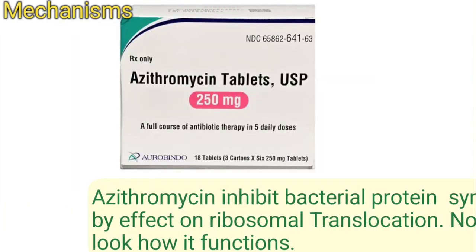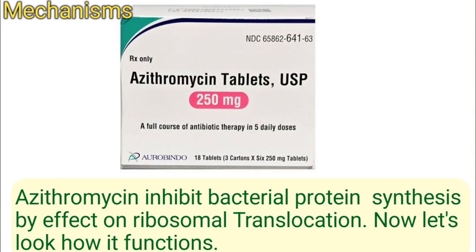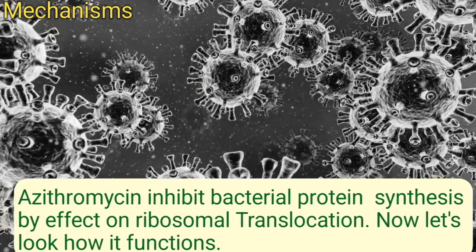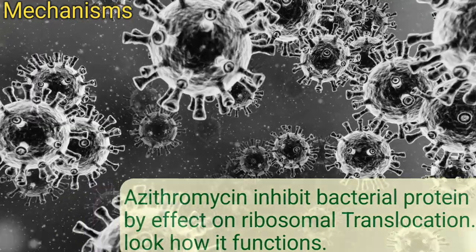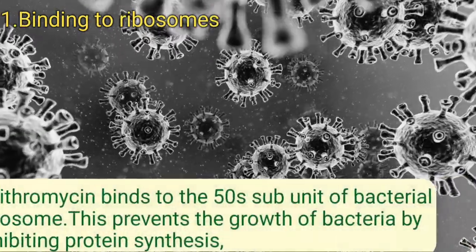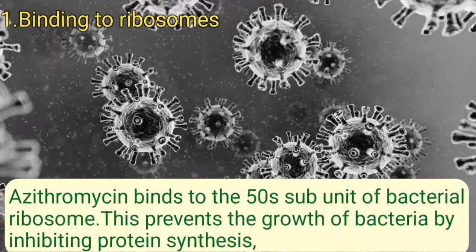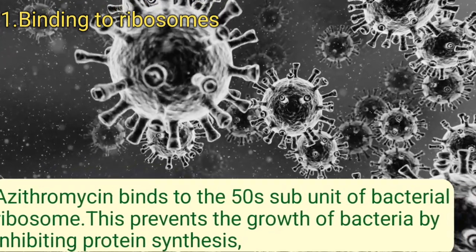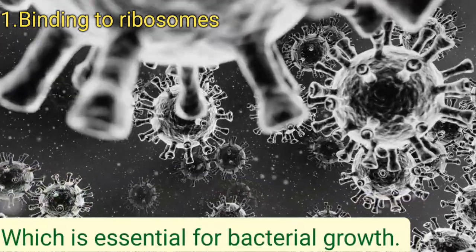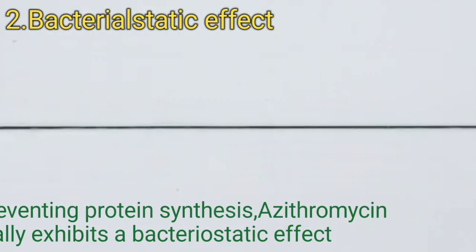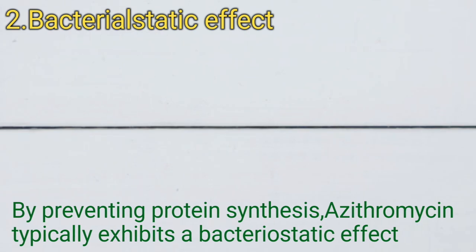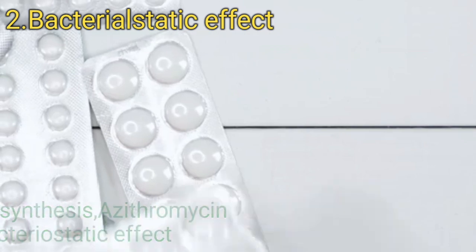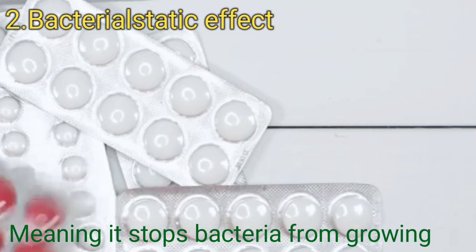Now let's look at the mechanism of action of azithromycin. Azithromycin inhibits bacterial protein synthesis by its effect on ribosome translocation. Number one, binding to ribosomes: azithromycin binds to the 50S subunit of the bacterial ribosome, preventing bacterial growth by inhibiting protein synthesis, which is essential for bacterial growth. Number two, bacteriostatic effect: by preventing protein synthesis, azithromycin typically exhibits a bacteriostatic effect, meaning it stops bacteria from growing.